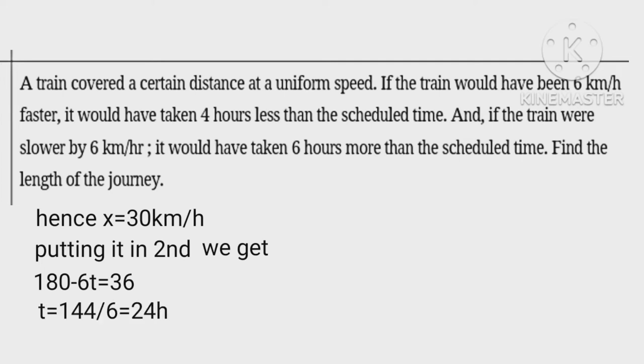Hence t equals 144 upon 6 equals 24 hour. Therefore distance covered equals 30 into 24 equals 720 kilometers.